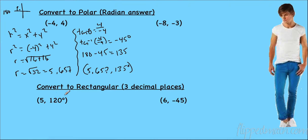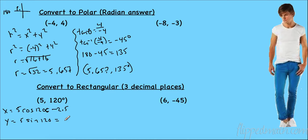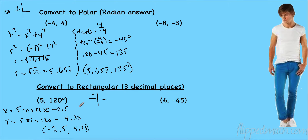Now let's convert polar to rectangular: the point (5, 120 degrees). X equals 5 cosine 120, which gives about negative 2.5. Y equals 5 sine 120, which gives about 4.330. So our rectangular point is approximately (negative 2.5, 4.33). We can check: 120 degrees is in the second quadrant — left and up — which matches negative X and positive Y.